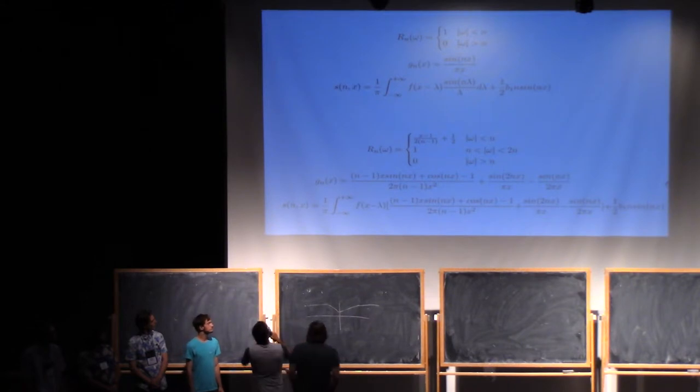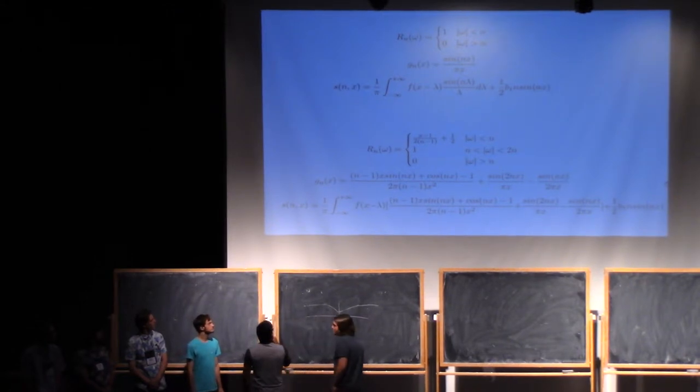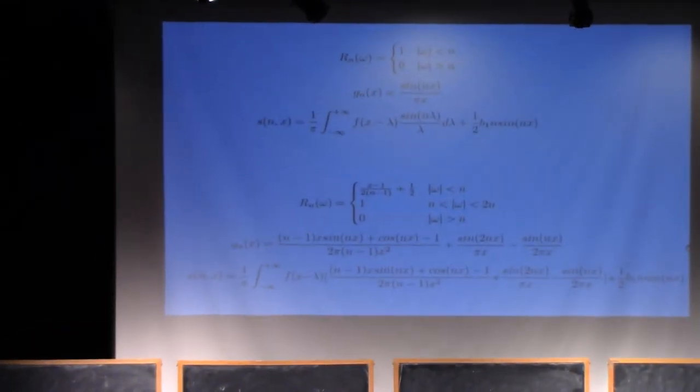And so the top three lines are kind of the equations that the paper brought up, and the last three are kind of what I brought up, and it ended up still producing the same Gibbs constant.